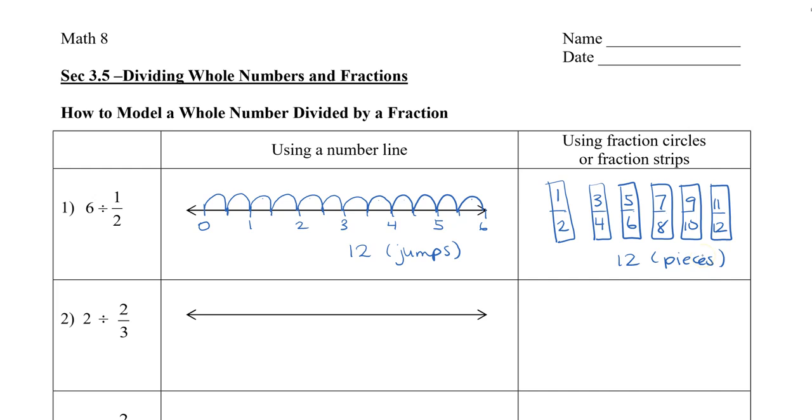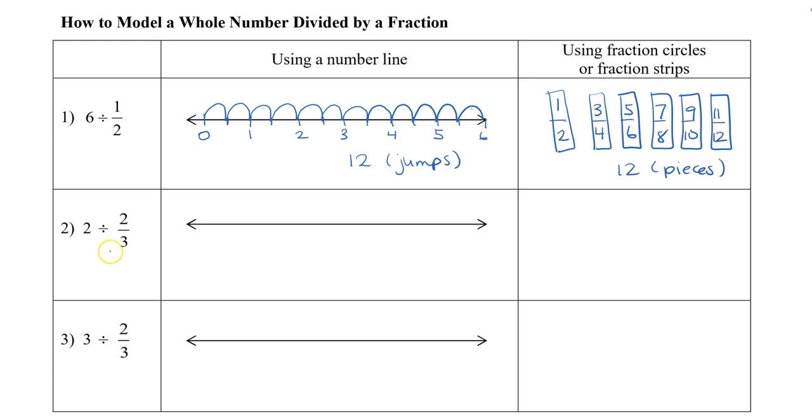All right, let's take a look at another example. So this time I have 2, and I'm going to divide by 2 thirds. So I'm going to start at 0, and this time I actually only need to go 1 and 2. Now because I want to have 2 third jumps, I need to divide my 1 into thirds,